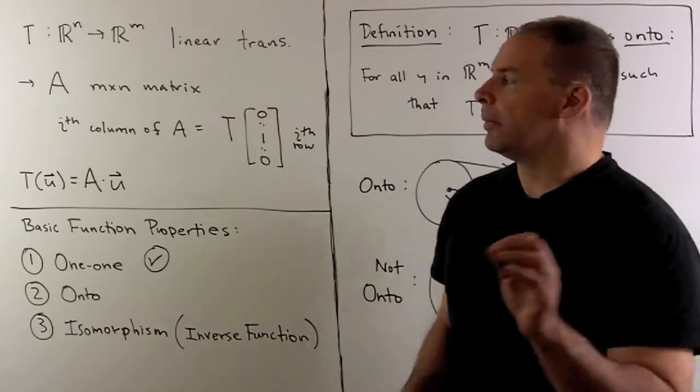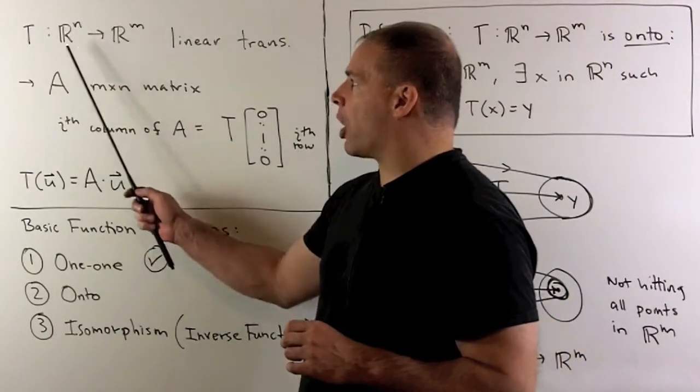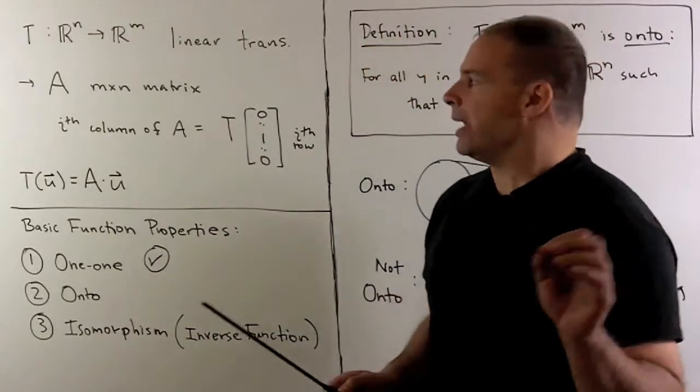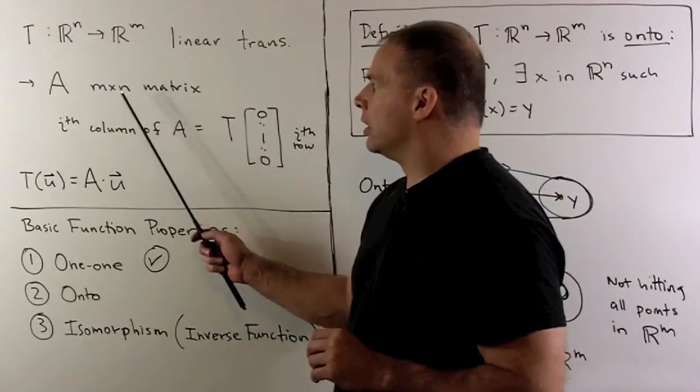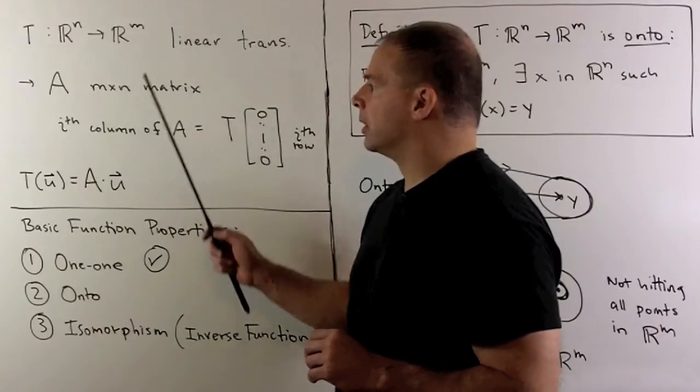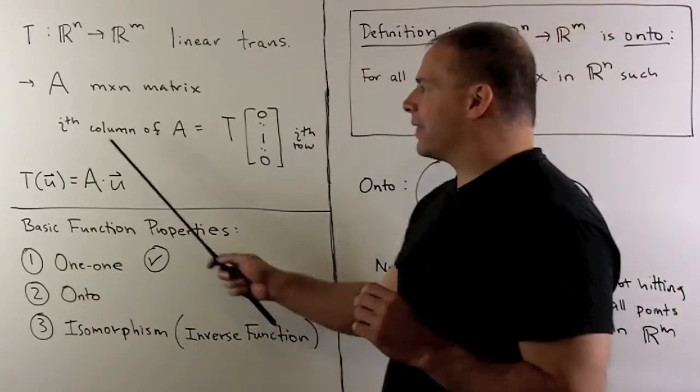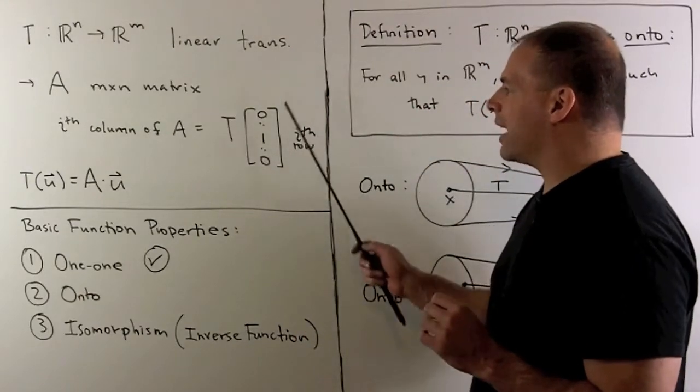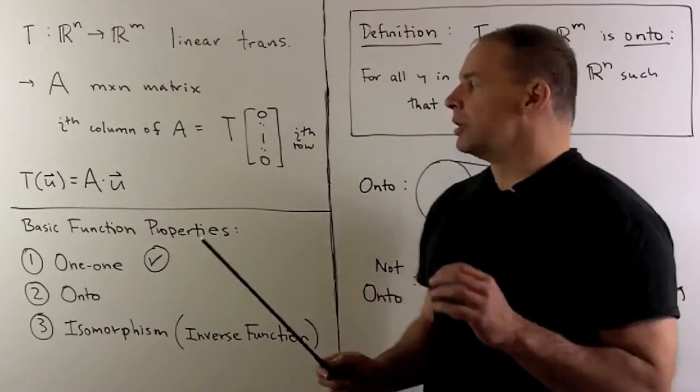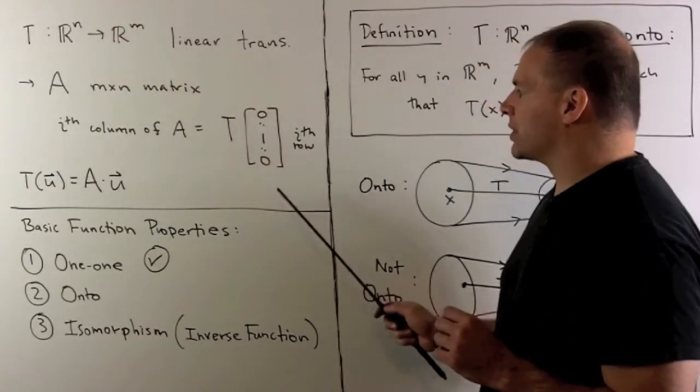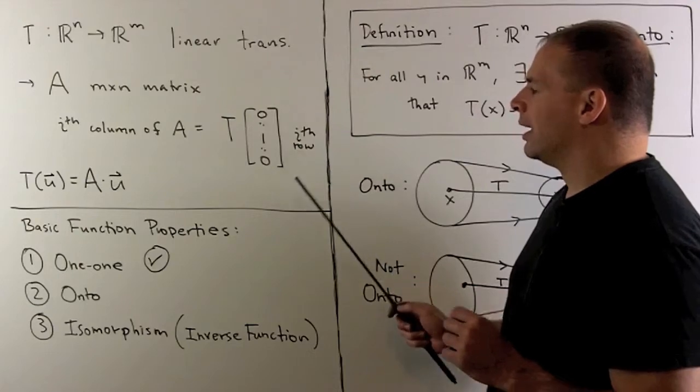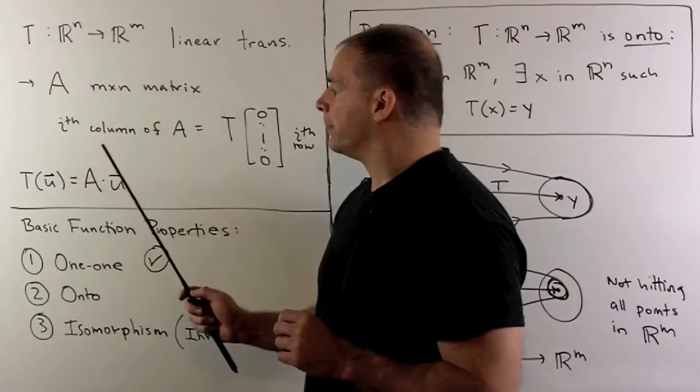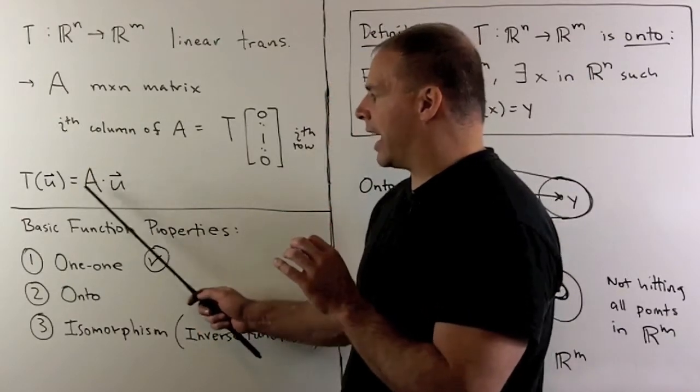Now, let's recall our setup. T is a linear transformation from Rn to Rm. We'll have an associated matrix A that will have m rows and n columns, so note they're reversed. The recipe for A, if I want the i-th column of A, we take our linear transformation and apply it to the i-th standard basis vector. So this vector is going to have all zeros except for a one in the i-th row. Then, if we apply t to the vector u in Rn, it's the same as the matrix vector product of A and u.